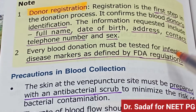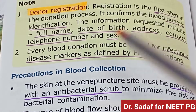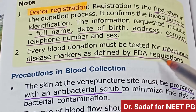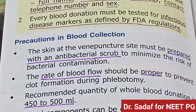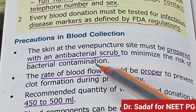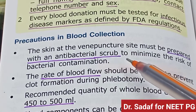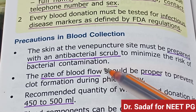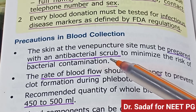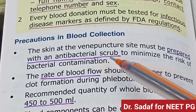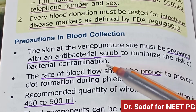Every blood donation must be tested for infectious disease markers as defined by FDA regulations. During blood collection, the skin at the venipuncture site must be prepared with an antibacterial scrub to minimize the risk of bacterial contamination.